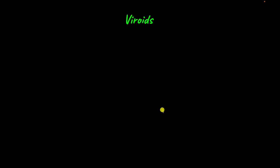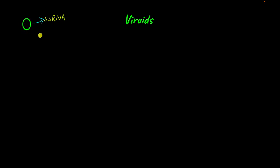Let's first take a look at viroids. Viruses at least have a protein coat surrounding their genome, right? Viroids don't even have that. They are made up of just single-stranded RNA, and this single-stranded RNA exists in a circular form. But even this small single-stranded RNA is capable of causing infections.